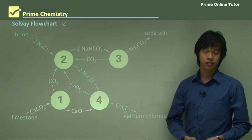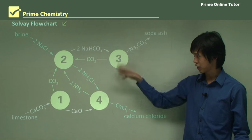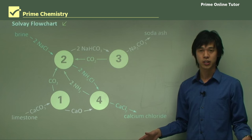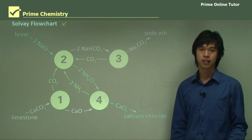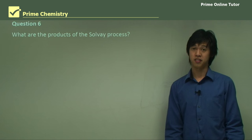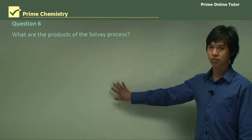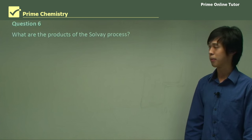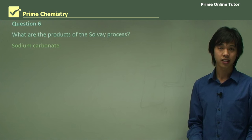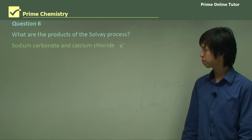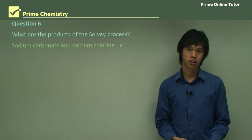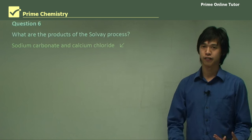That pretty much wraps up the lesson on the Solvay process. Now we'll move on to the question segment. First question: what are the products of the Solvay process? Sodium carbonate is obviously one, because that's the whole point of the process. Calcium chloride is also a major product, produced as a result of the ammonia recovery step.